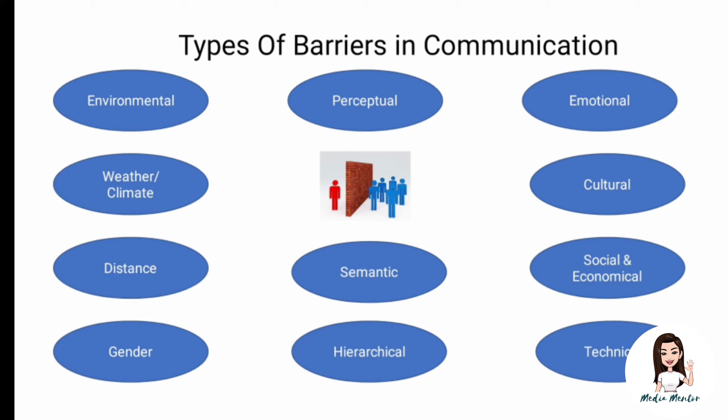A perceptual barrier is very personal — it depends on how a person thinks about or understands a specific message. Anything can have two or more meanings, and it depends on the receiver how they interpret it, which can lead to misunderstandings. These are examples of the many such barriers we study.